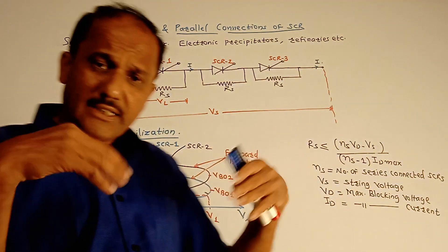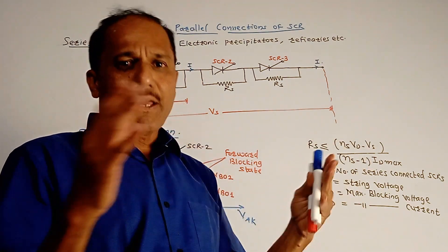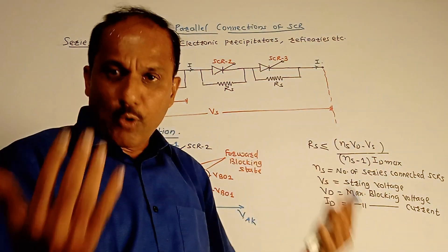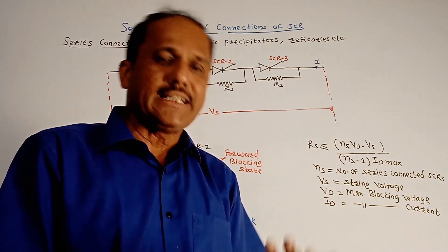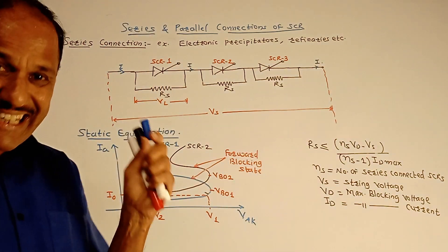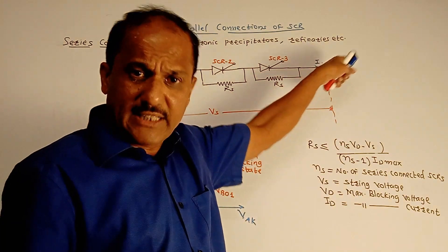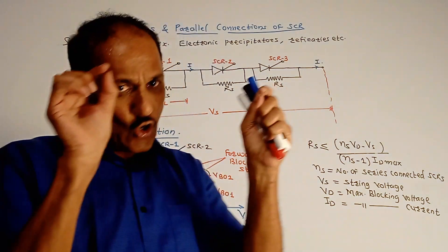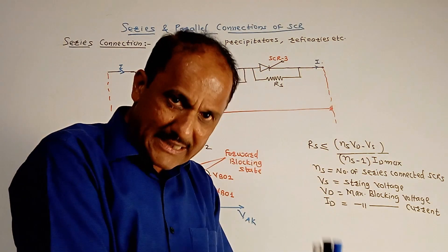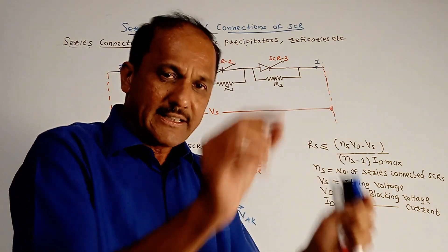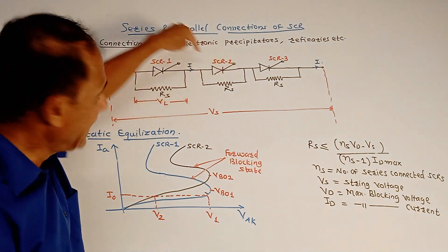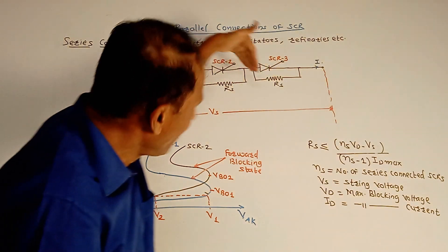In case of certain practical applications like chemical industries, electronic precipitators are used for the controlling of pollutions. In such cases there is a requirement of very large voltage which cannot be obtained by making use of a single SCR. As well as in case of refineries, higher voltage is required. Again, we cannot make use of a single SCR. So in all such cases, number of SCRs must be connected in series, that means one after other. For example, in this diagram I have shown three SCRs - SCR 1, 2, and 3 - they are connected one after other.